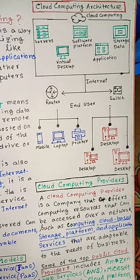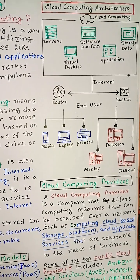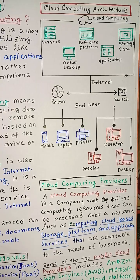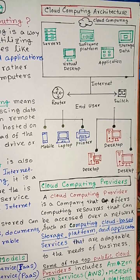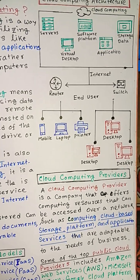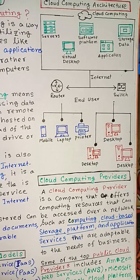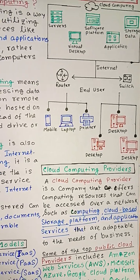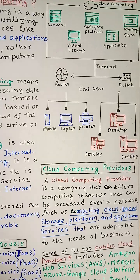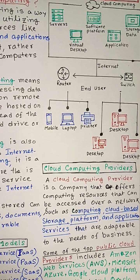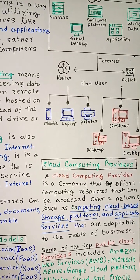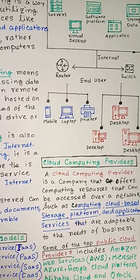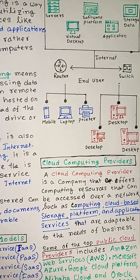Cloud computing architecture includes: Server, Virtual Desktop, Software, Platform, Applications, Storage, Data, Internet, Router, and Switch. Devices such as Mobile, Laptop, Printer, and Desktop are all connected to the internet.